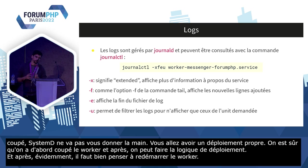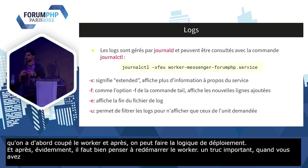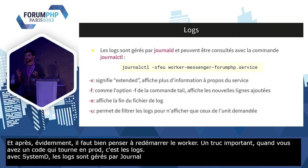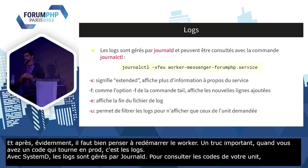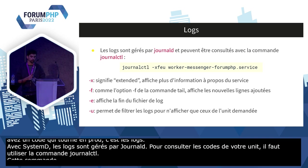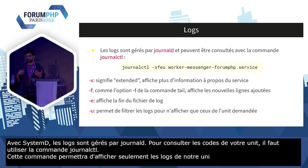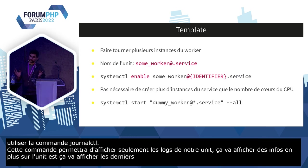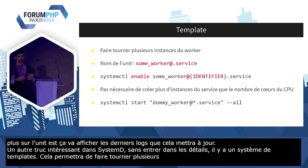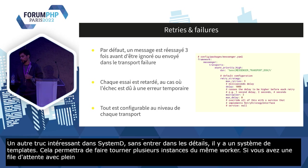Un truc important quand vous avez du code en prod, c'est les logs. Avec Systemd, les logs sont gérés par un outil qui s'appelle journald. Pour consulter les logs de votre unit, il faut utiliser la commande journalctl -xfu avec le nom de notre unit. Cette commande affiche seulement les logs de cette unit, affiche des infos supplémentaires sur l'unit, et affiche les derniers logs en les mettant à jour en temps réel. Un autre truc intéressant dans Systemd, c'est le système de template, qui va permettre de faire tourner plusieurs instances du même worker en parallèle pour dépiler plus vite.